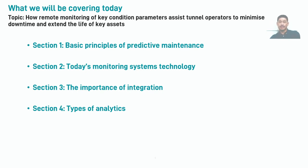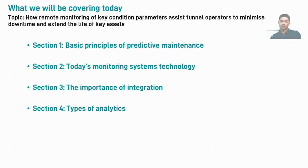We will be separating our discussion into four main sections, as you can see listed on the slide. As we progress through each section, I will relate each to the implementation within the tunnel environment to assist in tying these concepts to a real world example. I'll start with an introduction to some basic principles of predictive maintenance or condition monitoring and how it can be used to extend the life of critical assets. This will be followed with some examples of current technology used in these systems. We'll then discuss the importance of a close integration and interfacing between the monitoring and control systems, and finally we'll look at the types of data analytics being employed and new or developing trends.